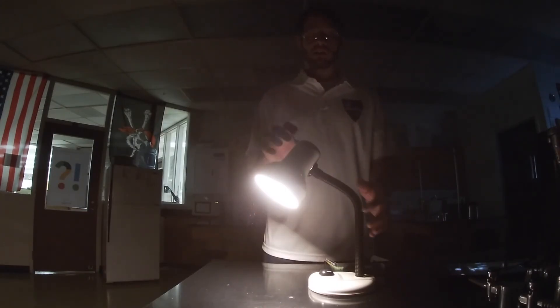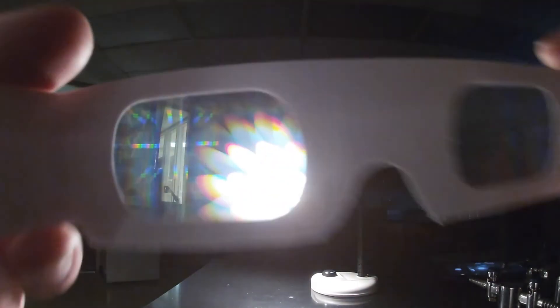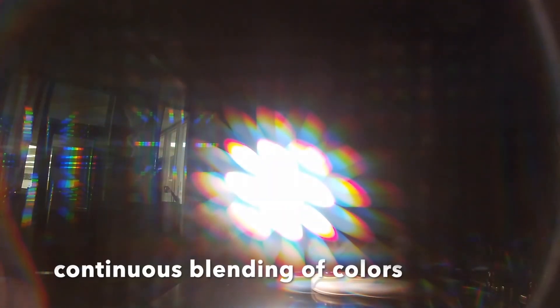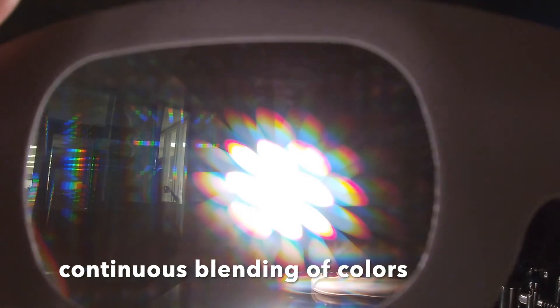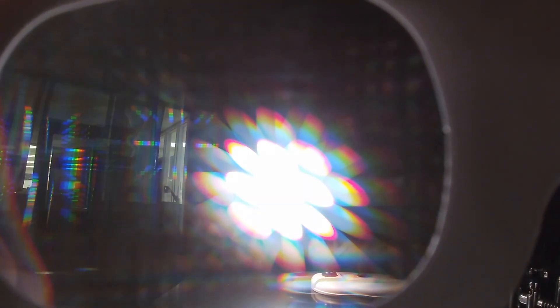We can do the same thing for an incandescent light bulb. This is a 60 watt light bulb with nice bright white light. You can see we have a continuous spectrum.